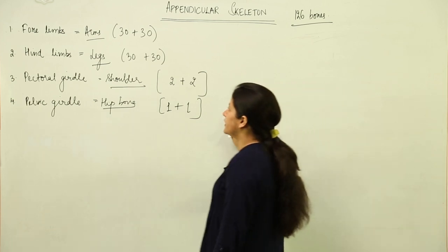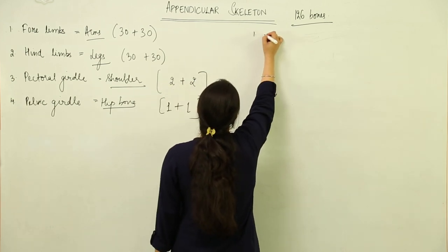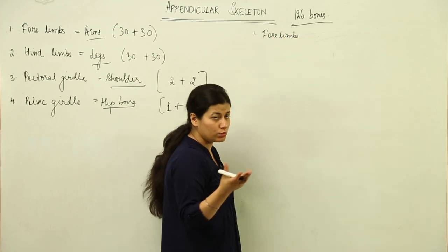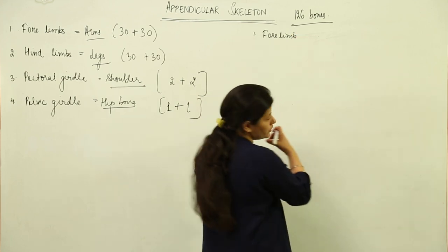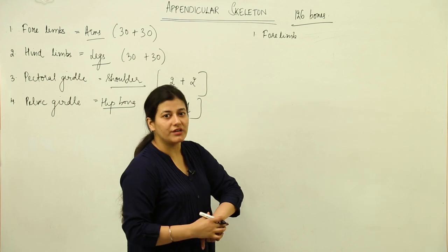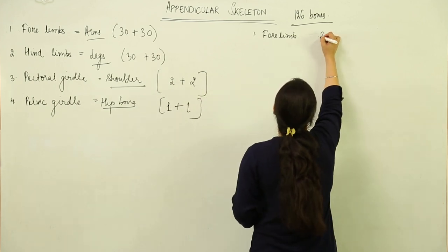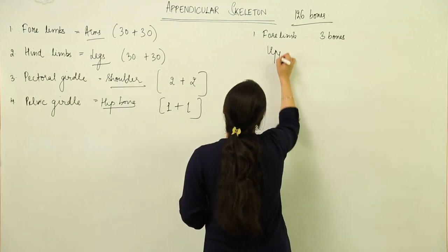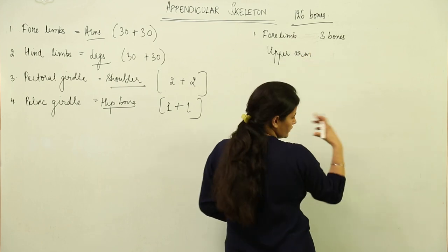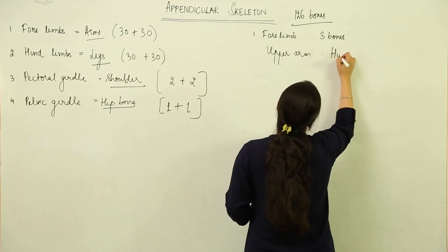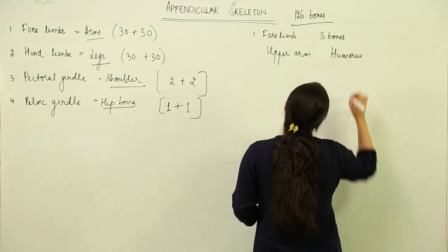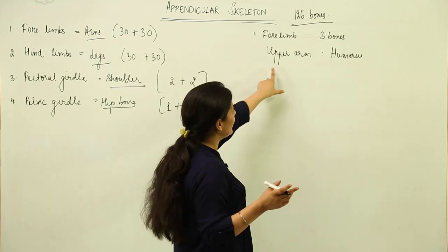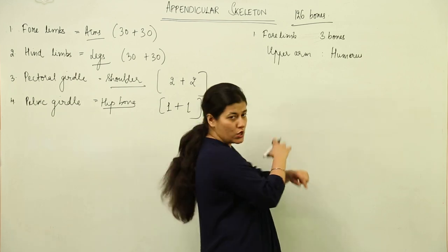In the forelimb, there are 30 bones — three in the arm and 27 in the hand. The upper arm has one bone, which is longer than the others, known as the humerus — spelled H-U-M-E-R-U-S, not to be confused with the word 'humorous.' The humerus then articulates with the lower arm.